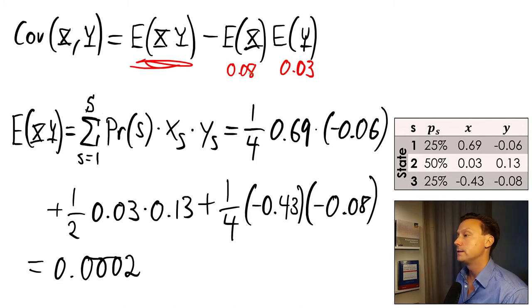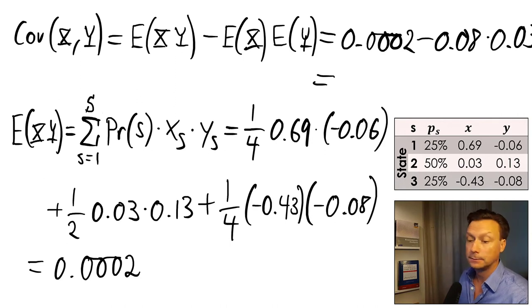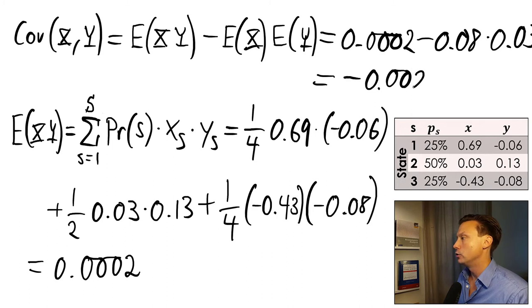Finally, we just need to put all of this into the covariance expression. That means that the covariance is 0.0002 minus 0.08 times 0.03. If we put this into our calculator, we're going to get that the covariance is minus 0.0022. So now we know that there is a negative relationship between the random variable X and Y.